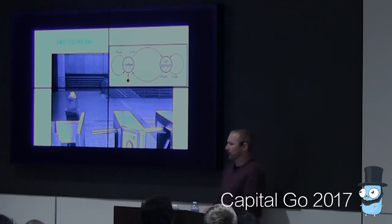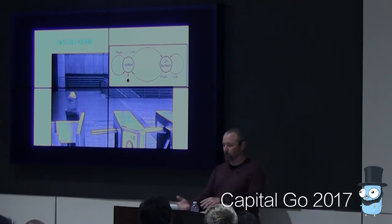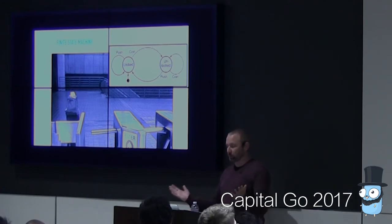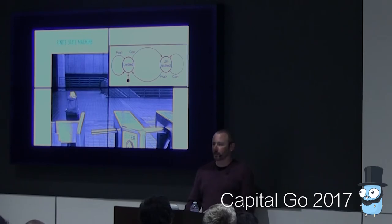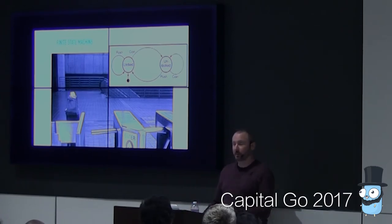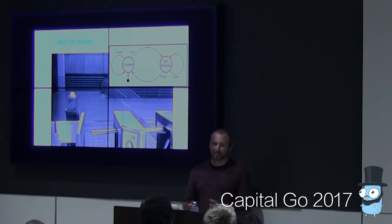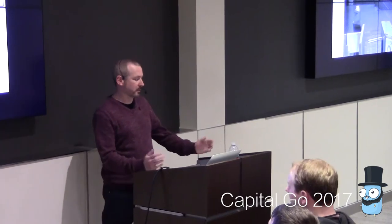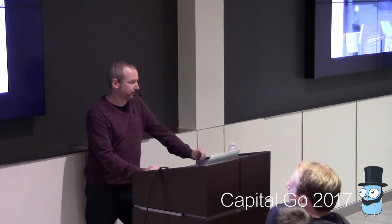Let's start with a finite state machine — this is a classic Wikipedia example. You've got an old school turnstile. There are two states: locked and unlocked. The state starts locked. Insert a coin and you transition to the unlocked state. You can keep putting more coins in, but it doesn't matter — you stay unlocked until you push it and return to the locked state. Nothing really new here.